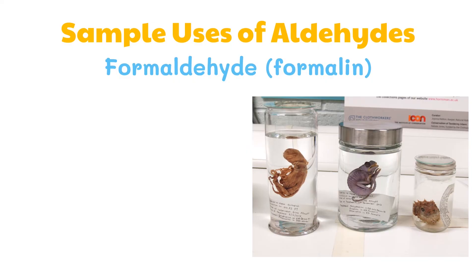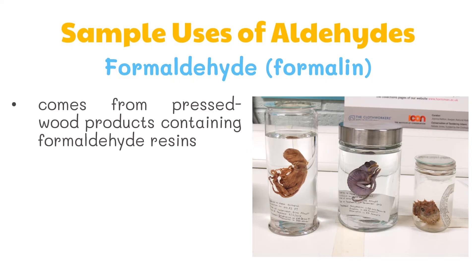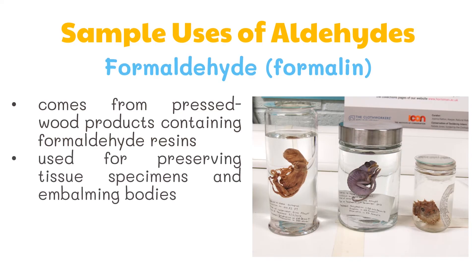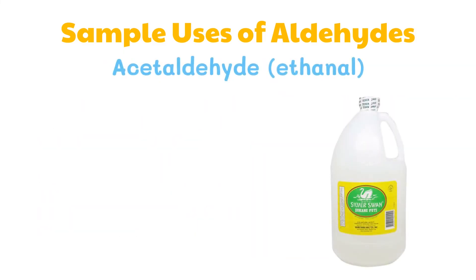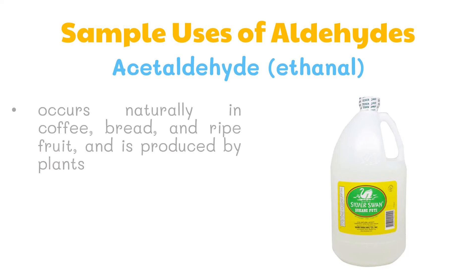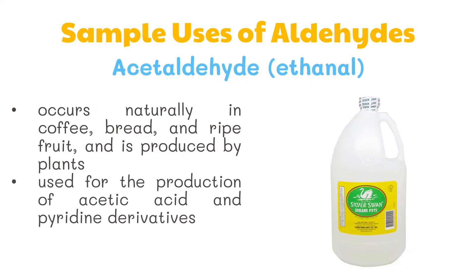Formaldehyde, also known as formalin, comes from pressed wood products containing formaldehyde resins. It is used for preserving tissue specimens and embalming bodies, and also to sterilize soil or other materials. Acetaldehyde occurs naturally in coffee, bread, and ripe fruit and is produced by plants. It is used in the production of acetic acid and pyridine derivatives.